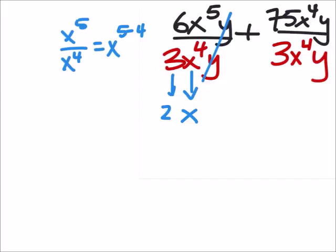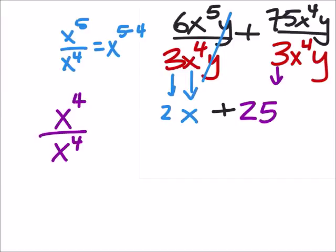And that is going to be added to our 2x. So here first we have 75 divided by 3 which would be 25, and then we have x to the power of 4 divided by x to the power of 4, so that's x to the power of 4 minus 4.